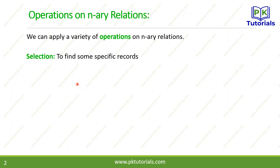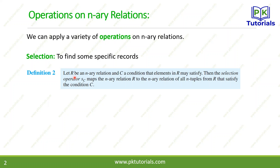The first operation is selection. Selection is used to find specific records. In a database we have many records, and normally we need some specific record, so for that we use the selection operation. The definition given for selection: let R be an N-ary relation and C a condition that elements in R must satisfy. Then the selection operator C maps the N-ary relation R to the N-ary relation of all tuples that satisfy the condition C.